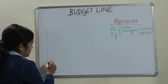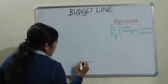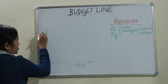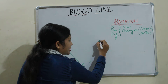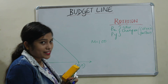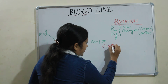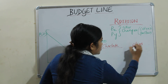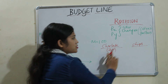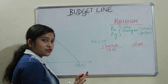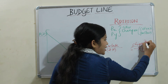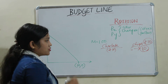Let's take the same example — chocolate and chips. Initially our budget line points were 10,0 and 0,20. Money income remains constant at 100 rupees. Chocolate price stays at 10 rupees. Now suppose the price of chips changes from 5 rupees to 10 rupees.